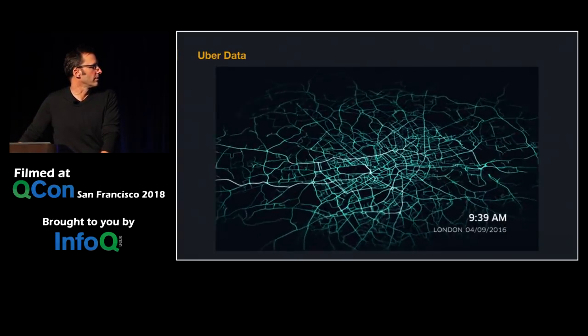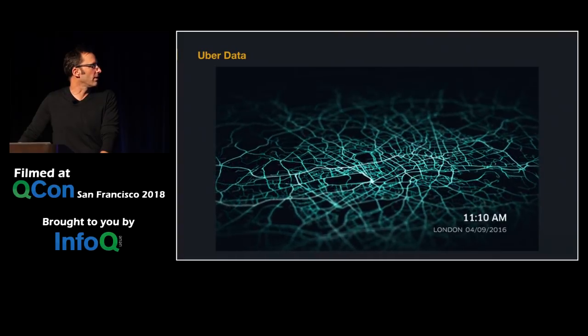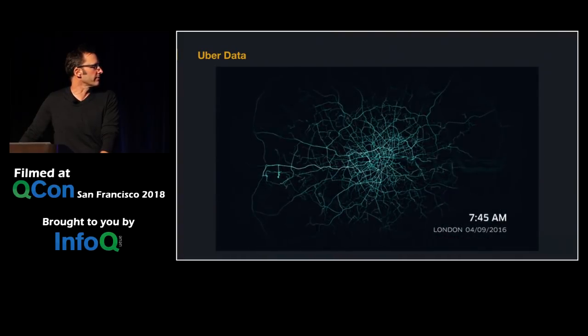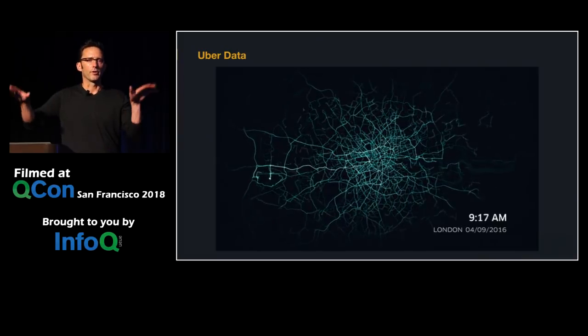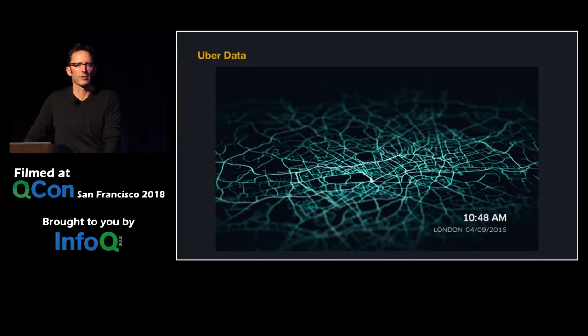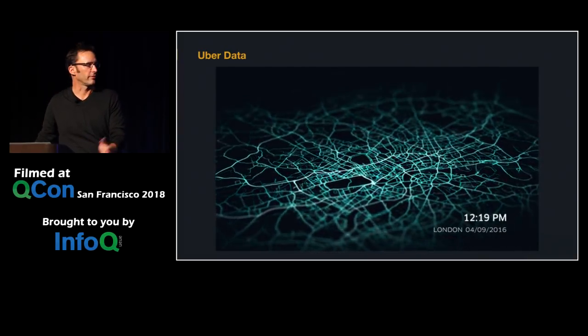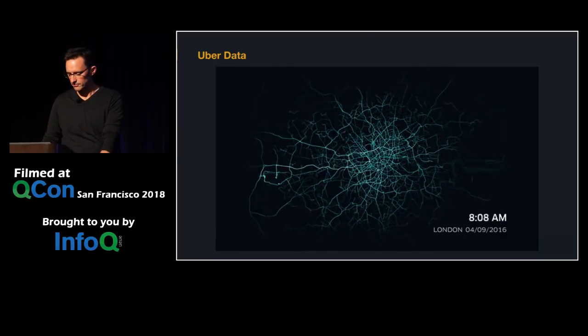This is GPS traces of the driver phones in London over the course of about six hours — from several years ago, so things have grown a lot since then. You can see how the cars very quickly cover a lot of the city, and this is all data that we can use for machine learning.